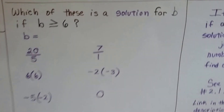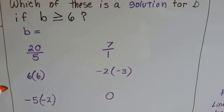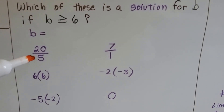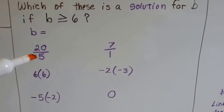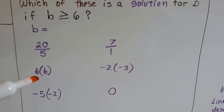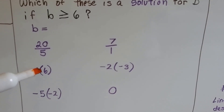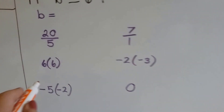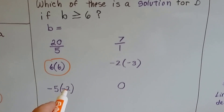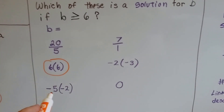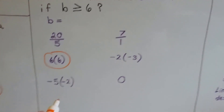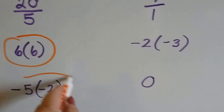Which of these is a solution for b if b is greater than or equal to 6? Is 20 over 5 greater than or equal to 6? Well, 20 divided by 5 simplified equals 4, and 4 is not greater than or equal to 6. How about 6 times 6? 6 times 6 is 36 — that's greater than 6. How about negative 5 times negative 2? When you multiply two negatives, it makes a positive, so that would be positive 10. Is 10 greater than 6? Yes — 10 is greater than 6. So this counts; it's a solution.